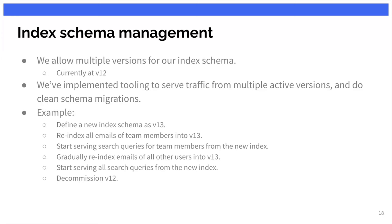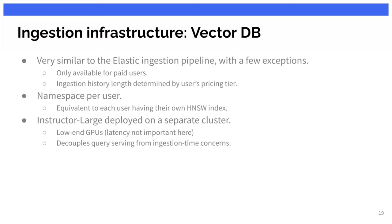For example, to add a new field or a new analyzer to our analyzer chain, we define the new index schema as version 13, re-index some portion of our emails — usually just the internal email traffic — into that index, test it for a while, and then run a job to re-index everything we ingested up to that point. During this period we can serve traffic from both indexes based on how far the re-indexing process has gone. When the new index is fully up, we drop the old one. We have very similar infrastructure for vector databases — users of the same codebase.